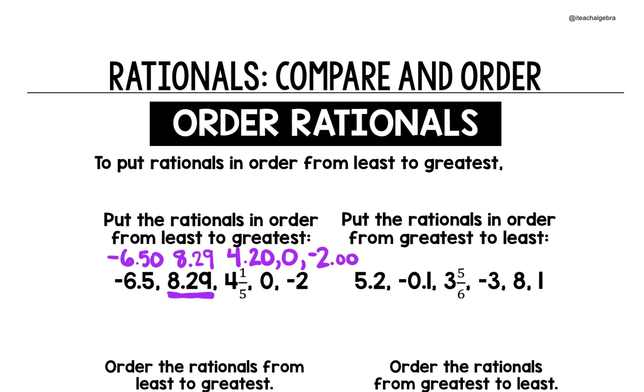So now we're going to start with the negatives because those are going to be the smallest. The negatives that are furthest away from zero are going to be the least, so that's where we have negative 6.5, and when I rewrite this, I'm going to rewrite them in the form that was given to us. So I can cross that one out. We have another negative here, which is negative 2. Now before we get to the positives, we have 0, and then we have 4 and 1 fifth, and 8.29. So again, when you're ordering these, you are going to put everything in the same form out to the same decimal place. It's going to make that easier to put them in order from least to greatest.